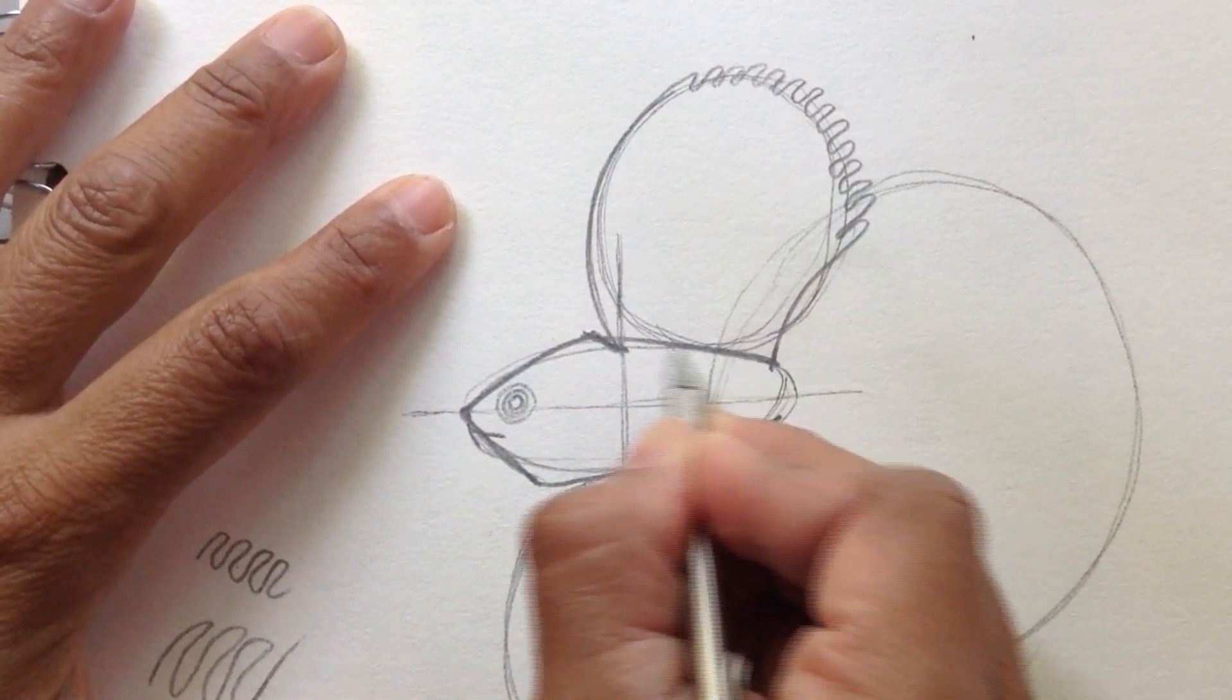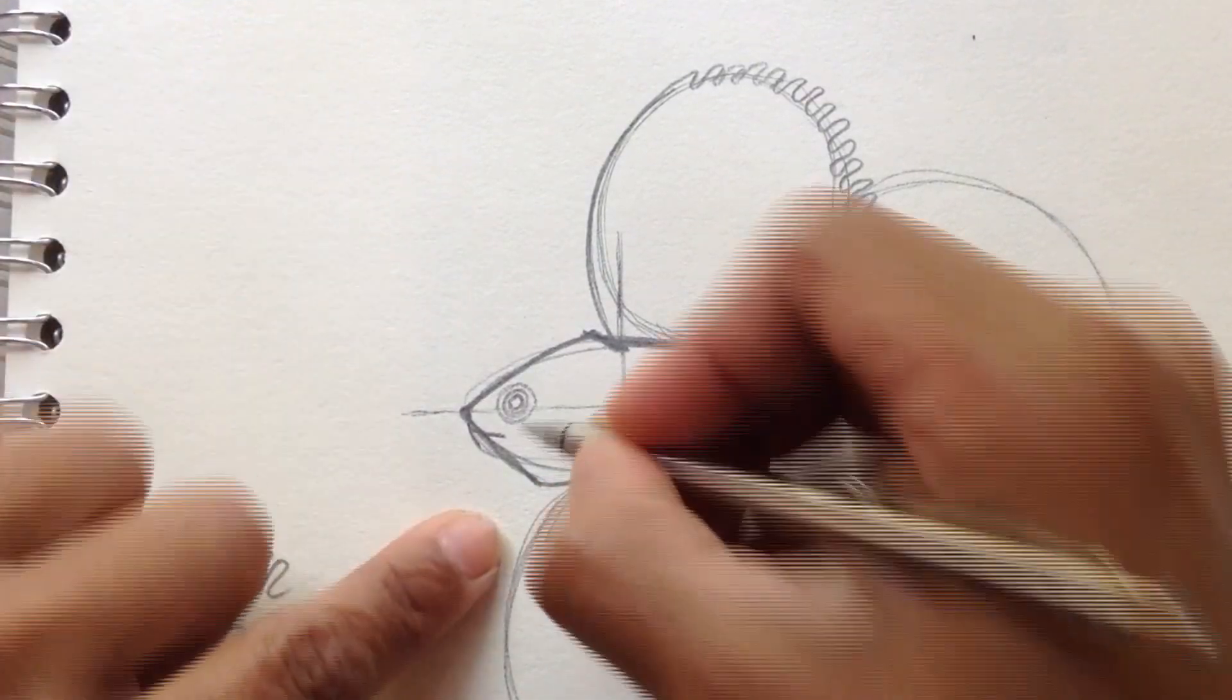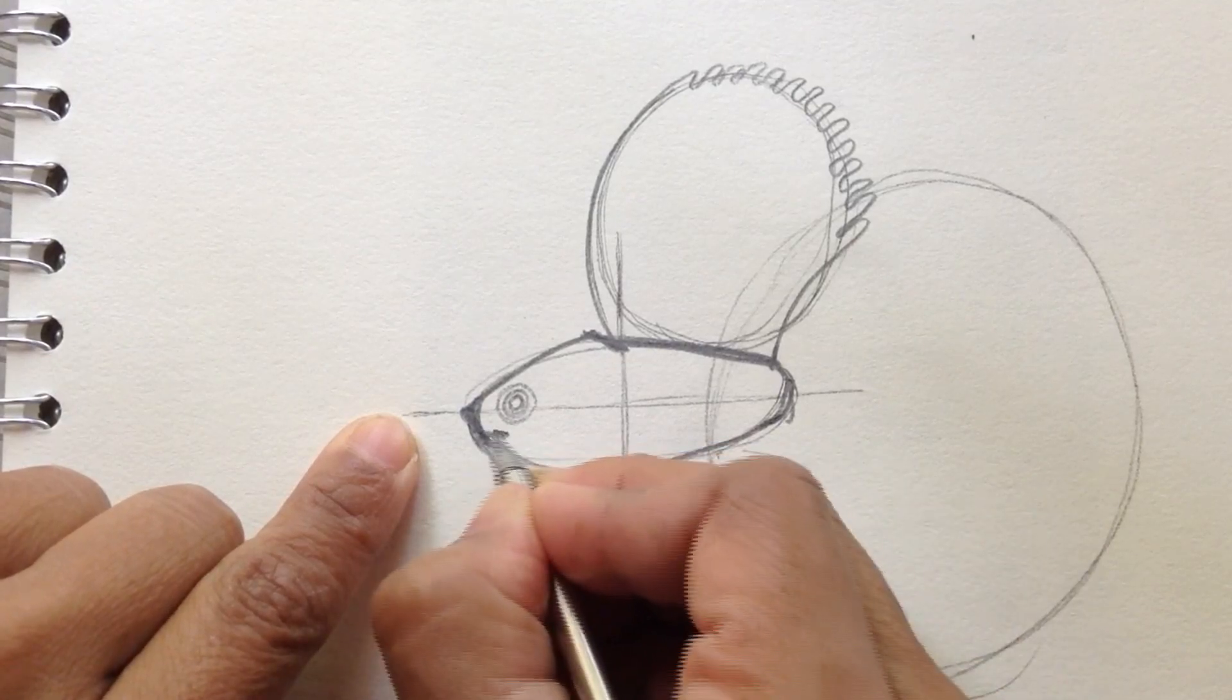Now we just connect this here. They have this very strange shape here.